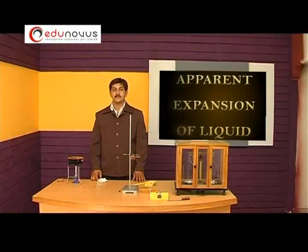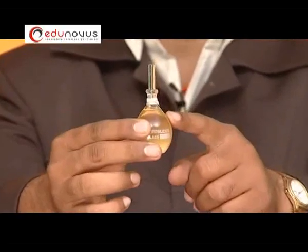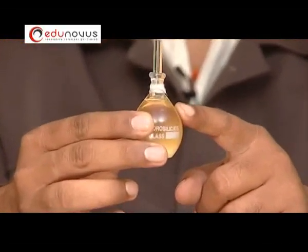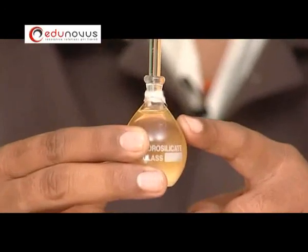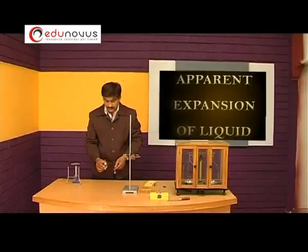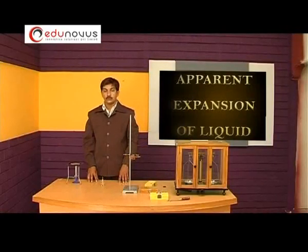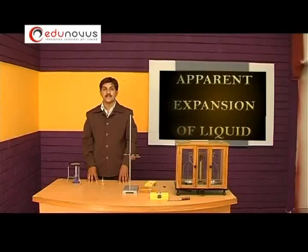Now, cool the specific gravity bottle with the liquid until room temperature is attained. We can observe some mass of liquid has been expelled out from the specific gravity bottle. After the liquid has cooled down to room temperature, determine the mass of the remaining liquid with the bottle using the physical balance.